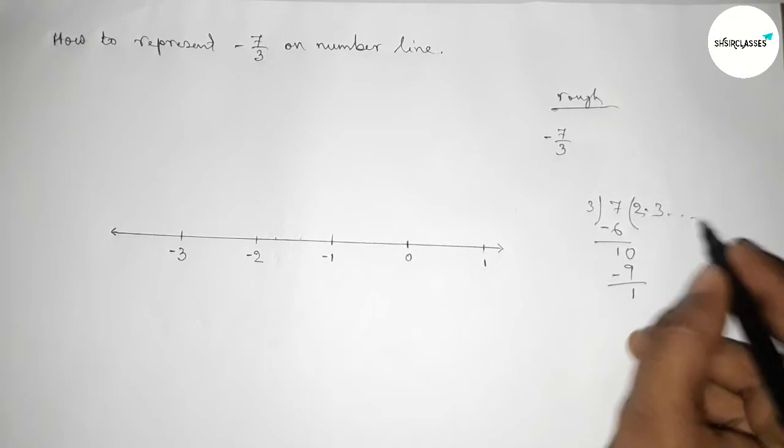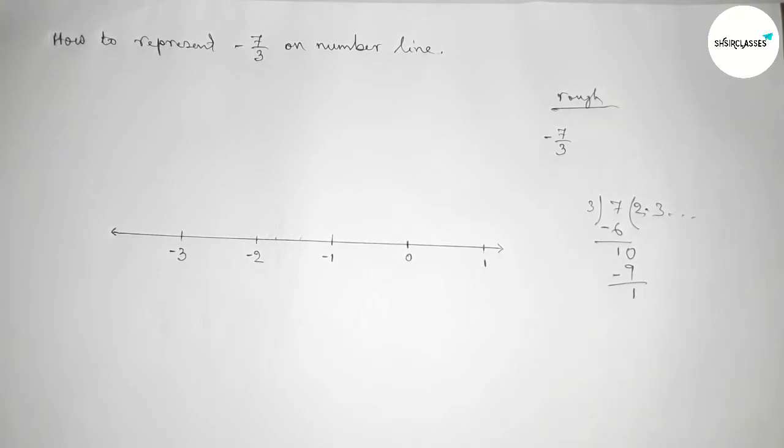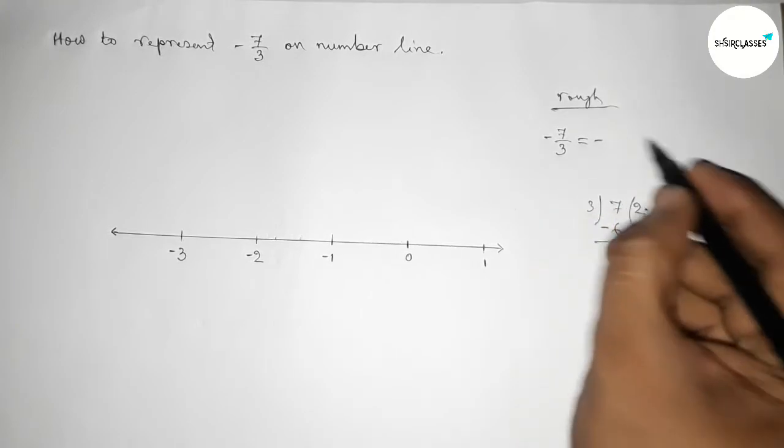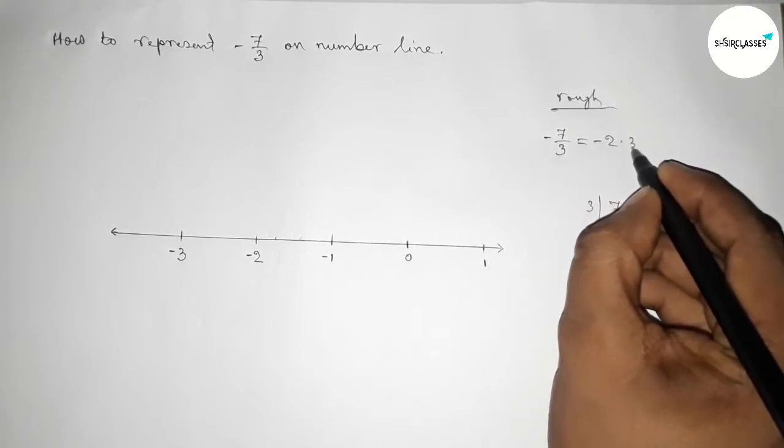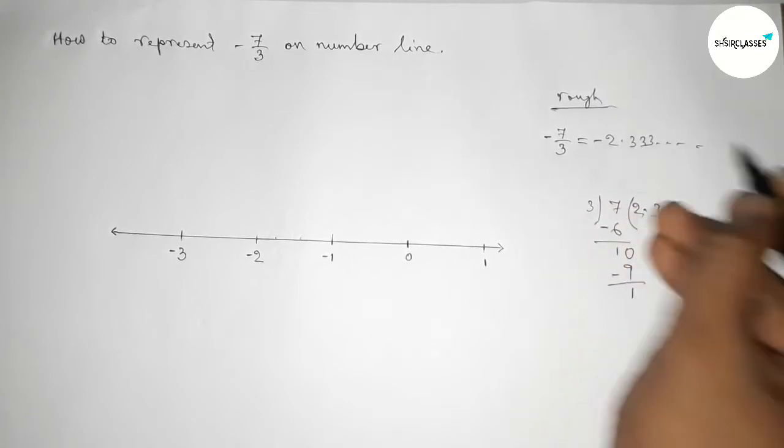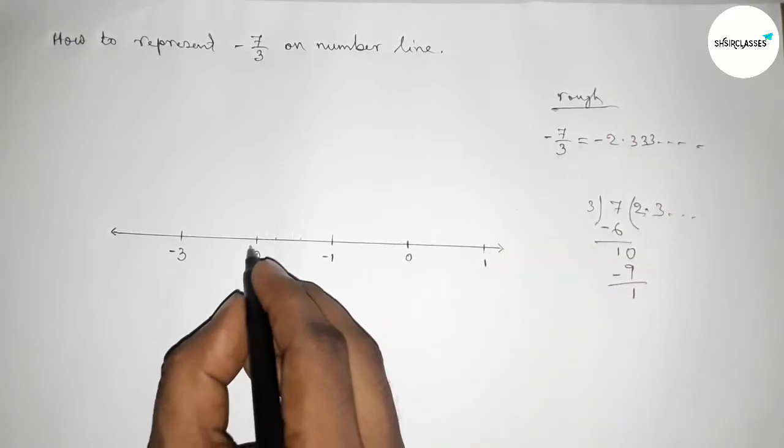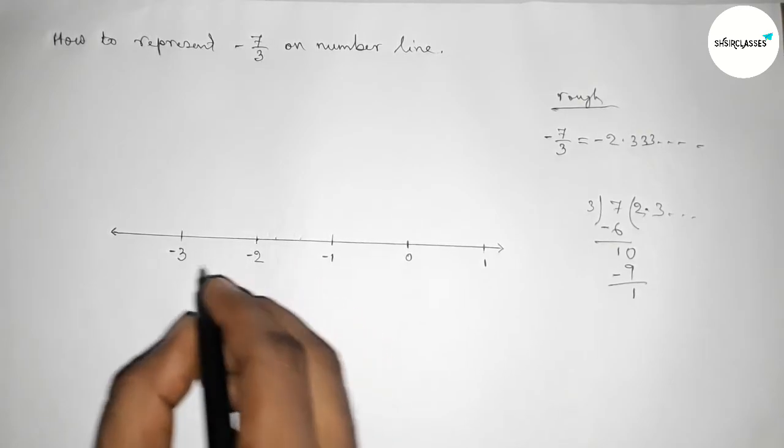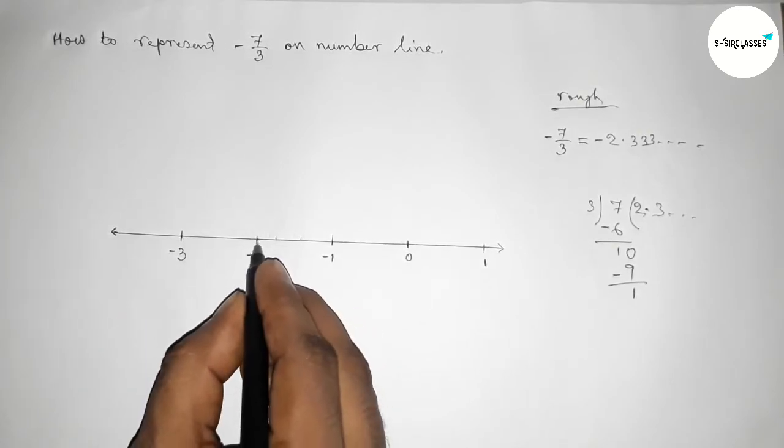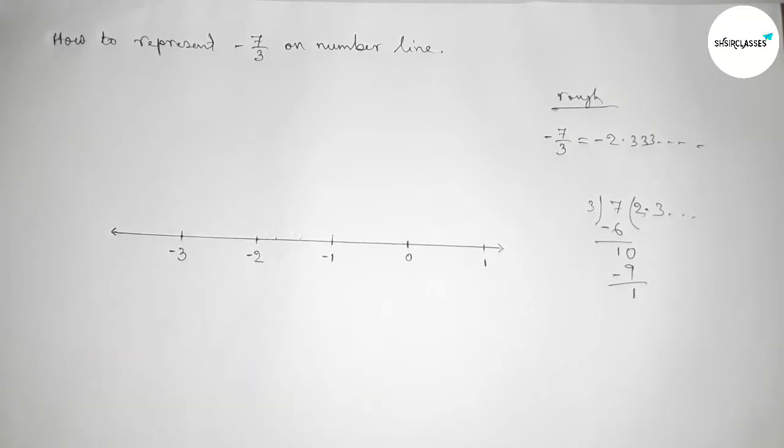So the value of -7/3 equals -2.333... (repeating). The value of -7/3 will be between -2 and -3.